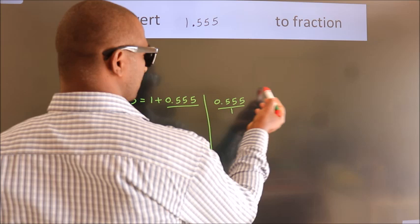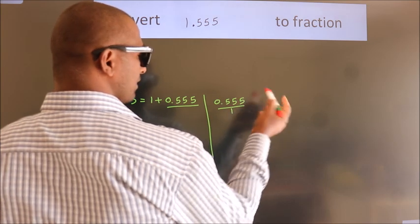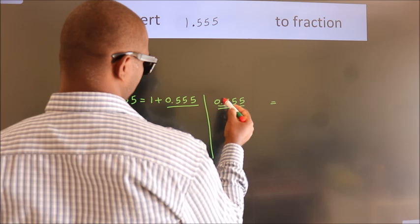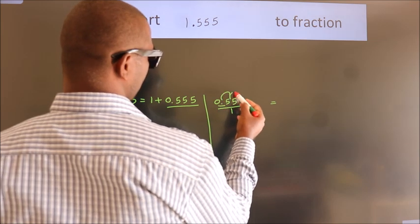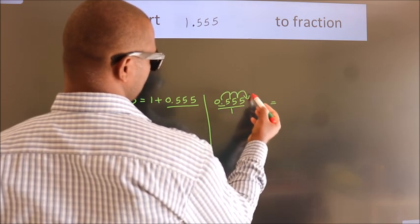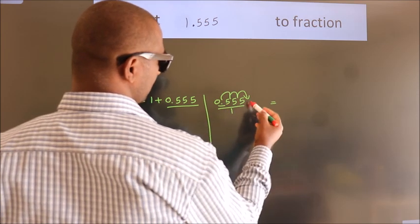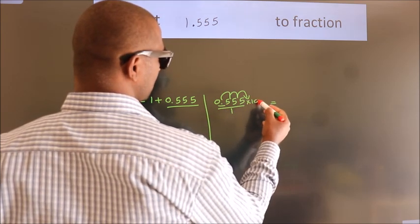To convert this to fraction, we have to move this decimal after 1, 2, 3 numbers. To move this decimal after 3 numbers, we have to multiply it with 1000.